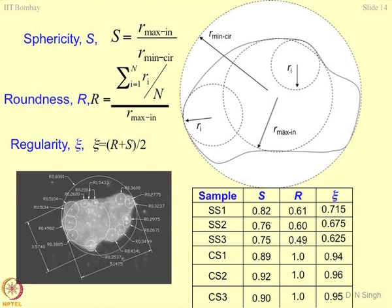Most of the time you talk about void ratios — E_max, E_min — which are very gross in nature, where you assume a lot of things: cubic arrangement, rhombic arrangement of coarse grain material based on perfect spheres. But what we are trying to show here is that those models are not correct because you have not looked into the microstructure of the grain.